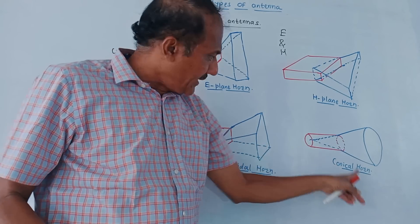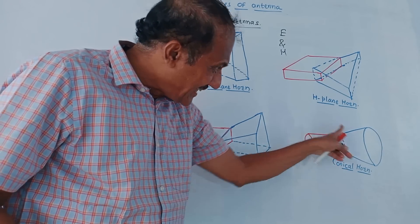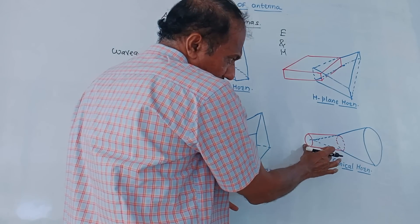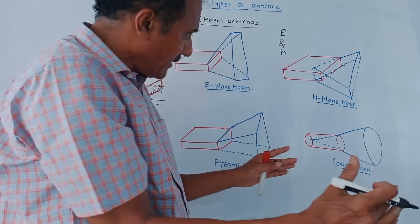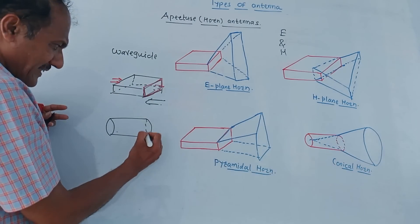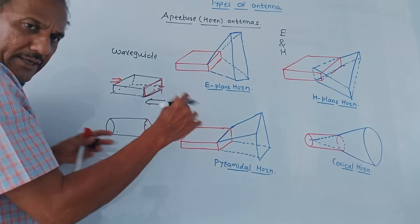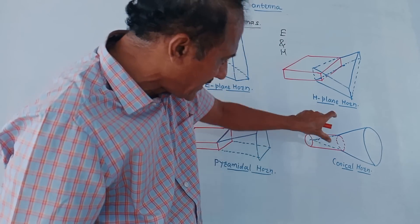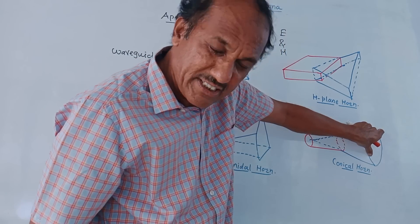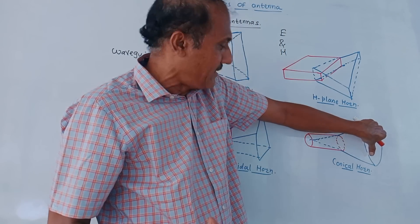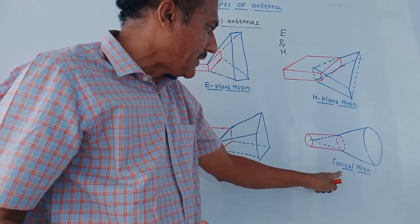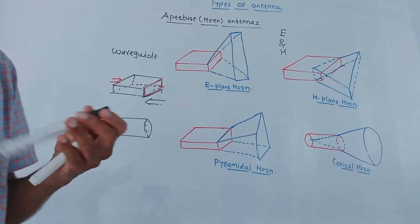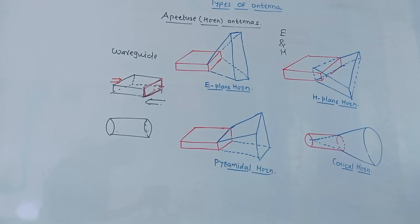Next is the conical horn, which is related to the cylindrical waveguide. A simple cylindrical waveguide has a sudden open end, and to avoid the drawbacks of abrupt discontinuity, a conical horn structure is connected at the output. These are the different types of aperture or horn antennas.